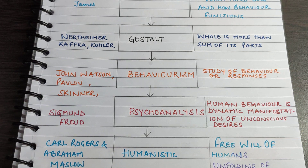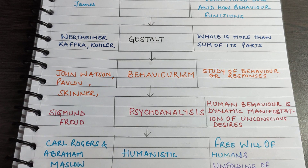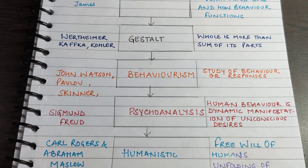This approach proposed that concepts like consciousness, image, and mind cannot be measured or studied objectively with scientific logic. What you can study is behavior, which is observable and verifiable. Watson was influenced by Pavlov's classical conditioning and was interested in the study of learning.